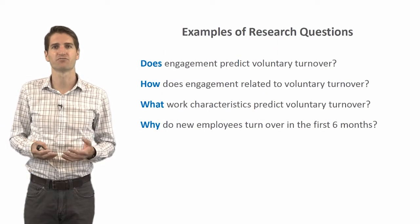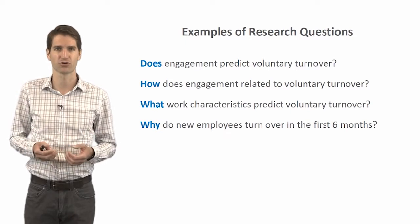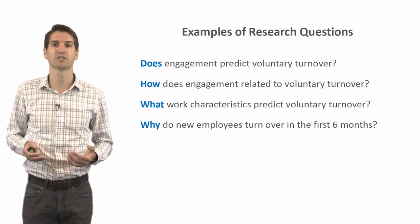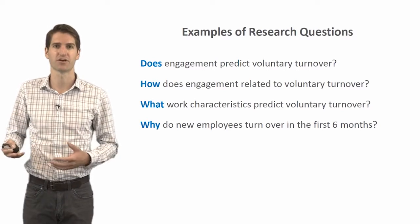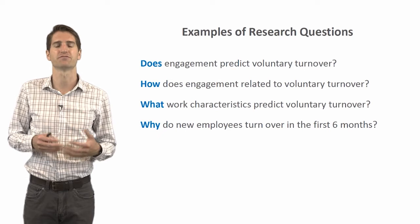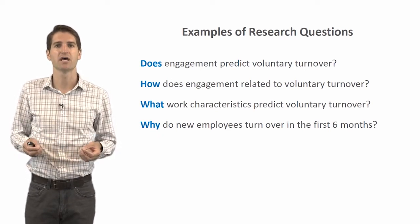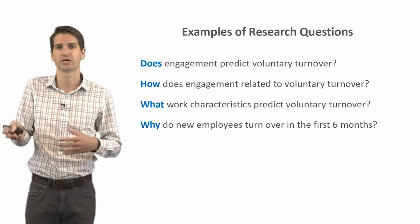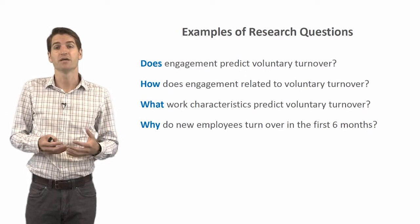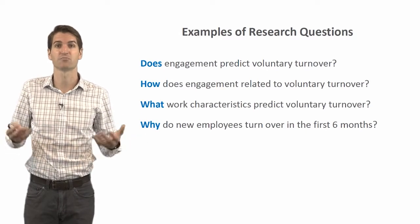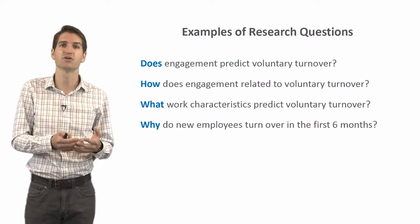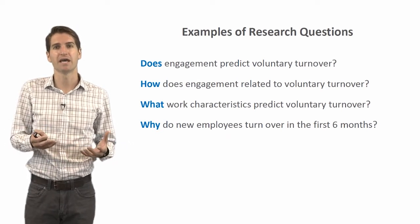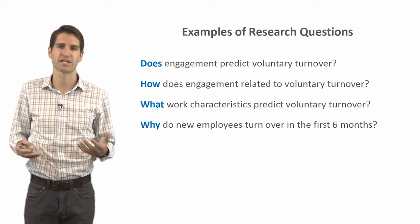Here are some examples of research questions around the concept of turnover. First, does engagement predict voluntary turnover? How does engagement relate to voluntary turnover? What work characteristics predict voluntary turnover? And why do new employees turn over in the first six months? Note that these are mostly exploratory in nature. We don't necessarily know whether engagement is going to predict turnover, so before stating a negative relationship, if we don't have a basis for this, we should start with a question. What characteristics predict voluntary turnover is more exploratory — we can see which ones are the best predictors of who stays or leaves.